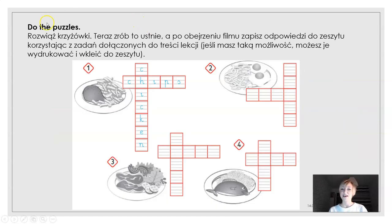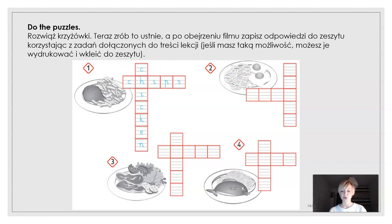Now do the puzzles — rozwiązujemy krzyżówki. Proszę, żebyście spróbowali zrobić to zadanie ustnie. Czyli patrzycie sobie na te krzyżóweczki, na to co znajduje się na obrazkach, i ustnie rozwiązujecie krzyżówkę. Zatrzymajcie sobie nagranie, żeby to spokojnie zrobić. To samo zadanie znajdziecie również w treści lekcji na stronie internetowej — stamtąd możecie wydrukować sobie to zadanie i parę jeszcze innych, albo po prostu przepisać. Nie musicie przerysowywać rysunków do zeszytu. Zatrzymajcie nagranie i ustnie rozwiązujemy krzyżówki.